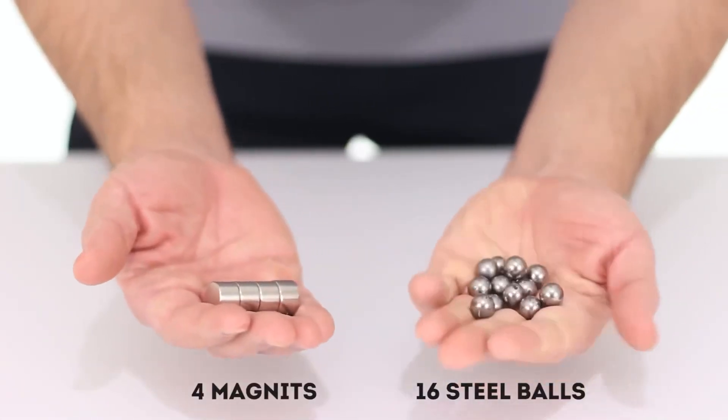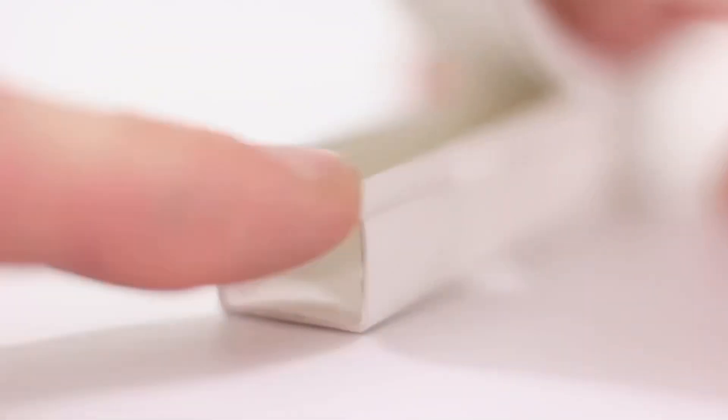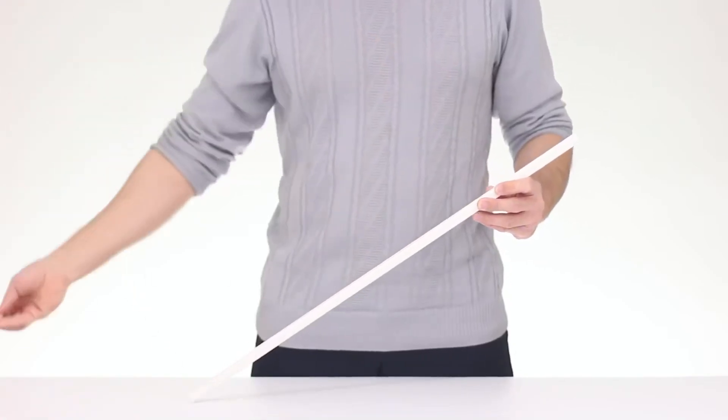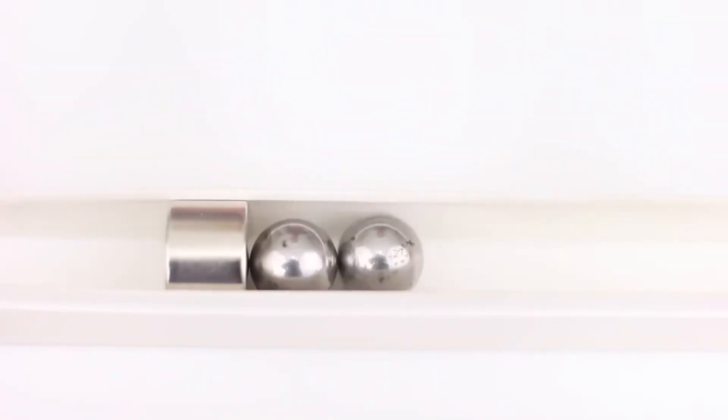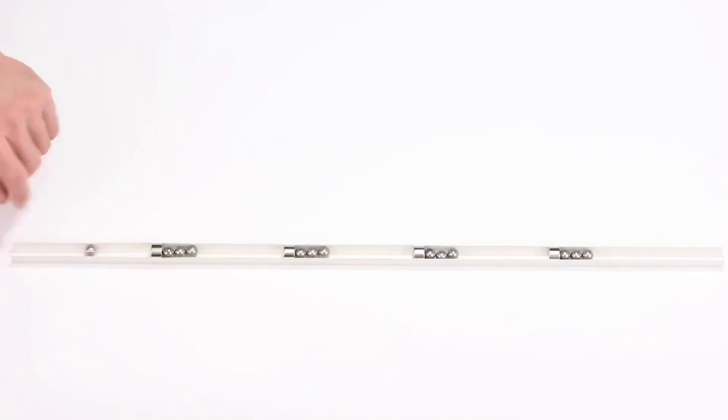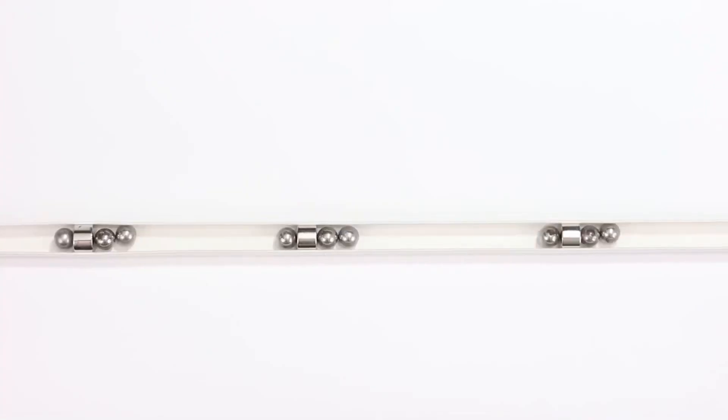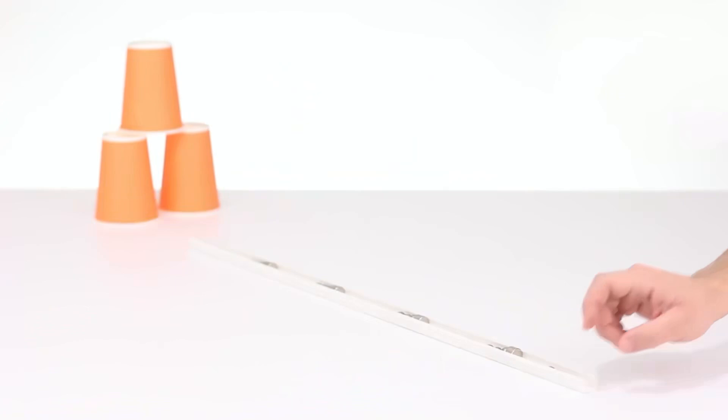Let's take four magnets and 16 steel balls. Now, we'll open up the plastic baseboard and place them inside as follows. Push a lonely ball to the nearest magnet and bam! All the balls have changed their position and the extreme one flew out the baseboard at a decent speed. This is a real magnetic rifle.